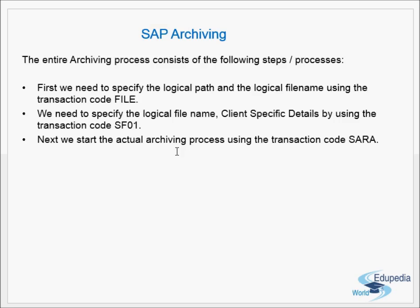This entire archiving process consists of the following steps. First, we need to specify the logical path and the logical file name using transaction code FILE. Next, we need to specify the logical file name and client-specific details using transaction code SF01. Third, we start the actual archiving process using transaction code SARA.